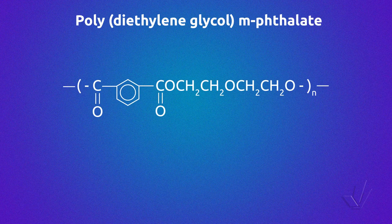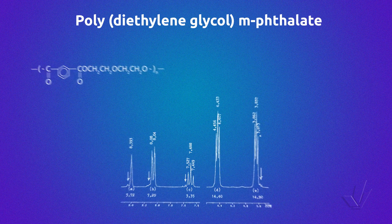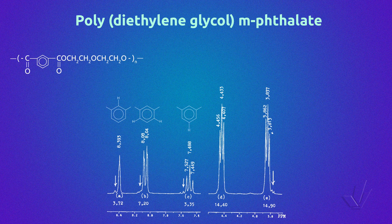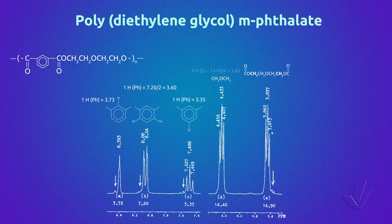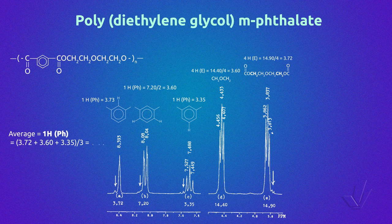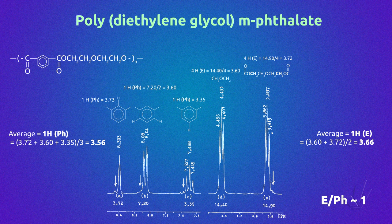Some polymers resulting from step polymerization can also be characterized to verify if the correct structure was obtained. It is the case of poly(diethylene glycol-m-phthalate), where all the protons are perfectly identifiable. The three types of aromatic protons are well separated, as are the two types of aliphatic ones. It is possible to calculate the integral of one proton of each structure and use the average integral to confirm that each unit is in the same amount as the other, as expected for this type of polymerization.